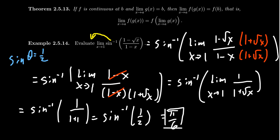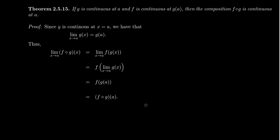So we were able to pull out sine inverse because it's a continuous function. Now, if both g and f are continuous functions — more precisely, if g is continuous at a and f is continuous at g of a — then the composition of two continuous functions will be continuous. The argument behind it is actually fairly straightforward.